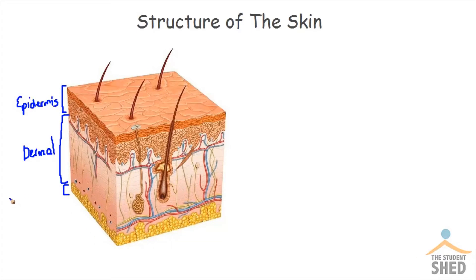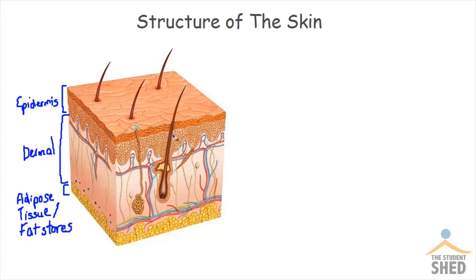the third layer is something called adipose tissue, also called fat stores. So those are the three layers of the skin: the outer epidermis, the dermal layer, and the adipose tissue or fat stores.